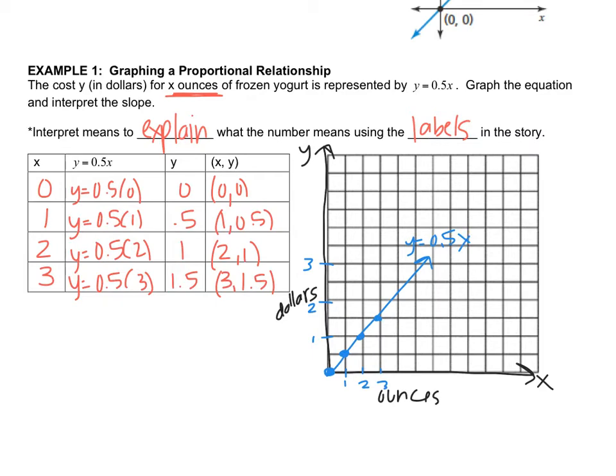Let me label y equals 0.5x. The only other thing we have to do is interpret the slope. In order to find the slope, this time I'm going to use the slope formula to practice. So I'll use 1, 0.5, and 2, 1 in the formula.